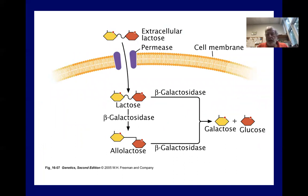This shows beta-galactoside permease in the cellular membrane, bringing in the lactose, and then beta-galactosidase splitting it into galactose and glucose, its two monomers.